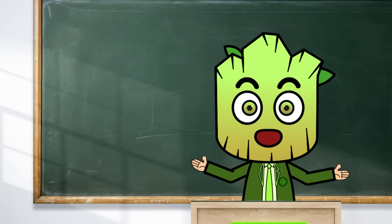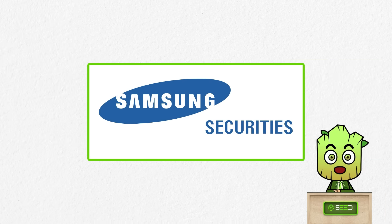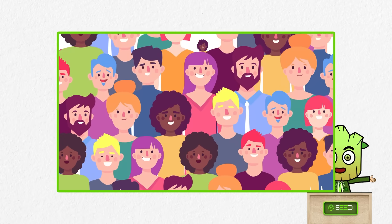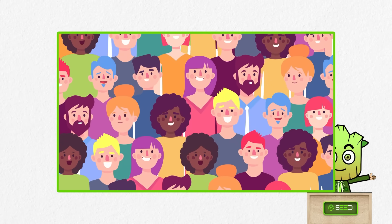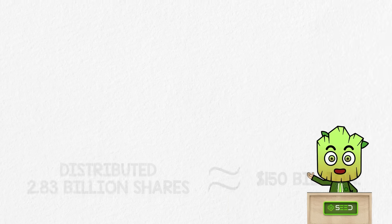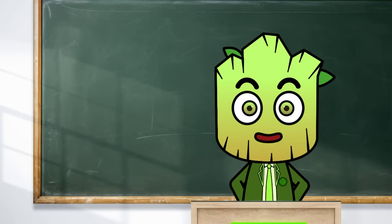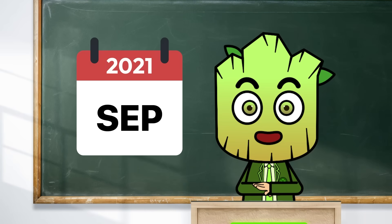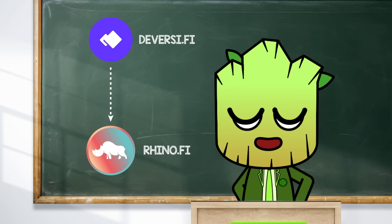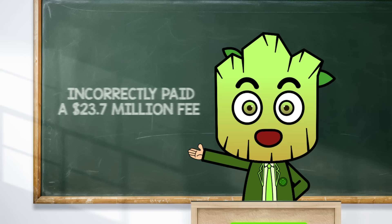Here are three infamous crypto moments. First, Samsung Securities mistakenly paid its employees 1,000 Samsung Security shares instead of 1,000 Korean won per share in dividends. This error distributed 2.83 billion shares — roughly $150 billion. Mistakes happen even in high finance. In September 2021, a small decentralized finance trading platform called Diversify, since rebranded as $90.fi, incorrectly paid a $23.7 million fee for one of its transfers.